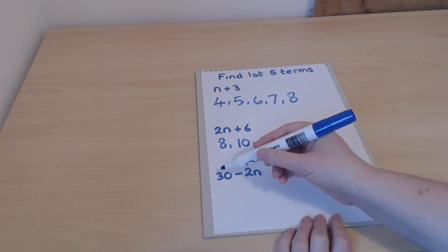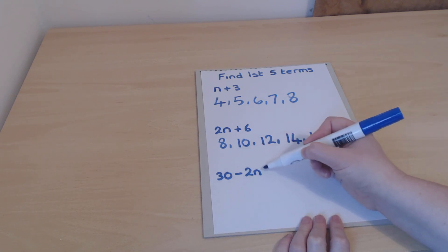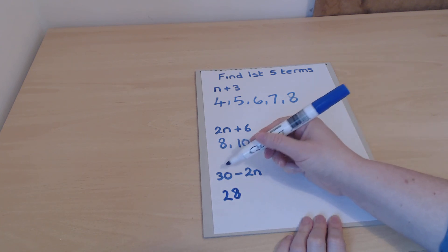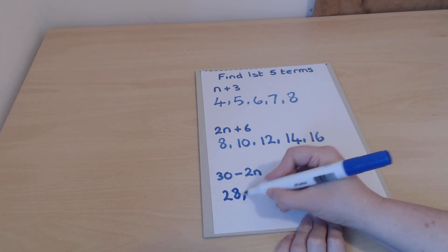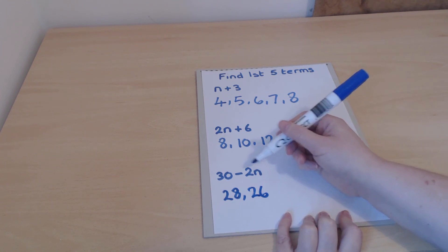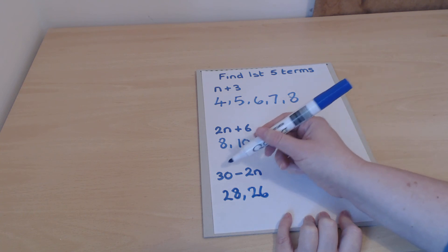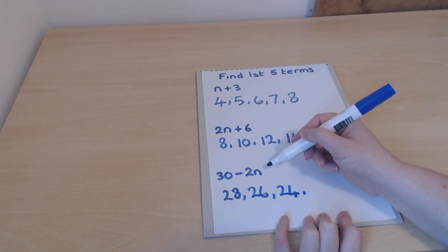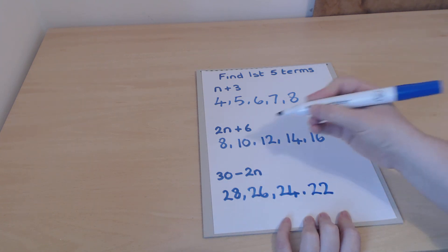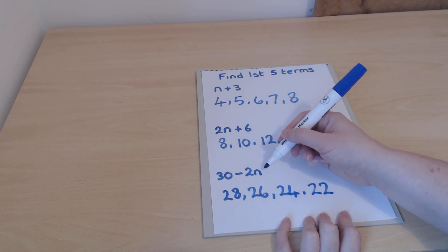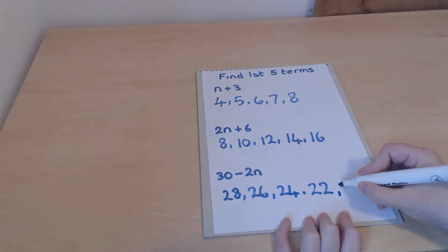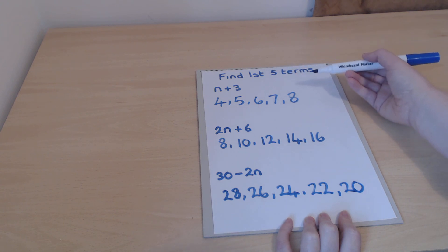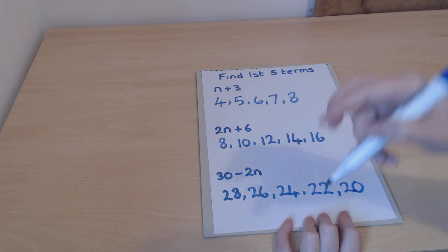One final one. When n is 1, we have 30 minus 2 times 1 which is 2, so 30 minus 2 gives 28. When n is 2, 30 minus 2 times 2 which is 4, so 30 minus 4 gives 26. When n is 3, 30 minus 2 times 3 which is 6, so 30 take away 6 is 24. When n is 4, 30 minus 2 times 4 which is 8, so 30 take away 8 is 22. When n is 5, 30 minus 2 times 5 which is 10, so 30 take away 10 is 20. That's how you use a rule to work out the terms — sometimes finding the first five, sometimes just one big term.